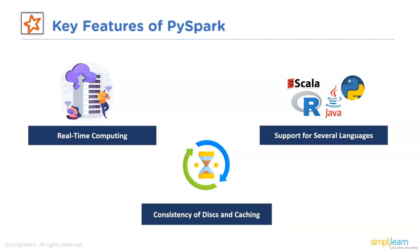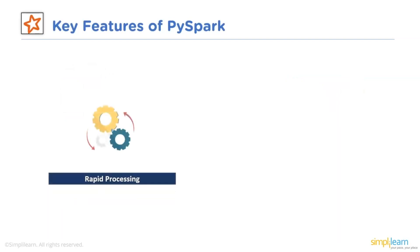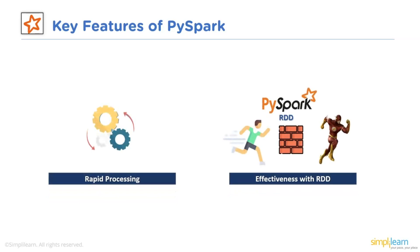The next feature is consistency of disk and caching. The PySpark framework offers powerful caching and reliable disk consistency. Time is money, so to work effectively we need powerful and fast processing. The next amazing feature of PySpark is rapid processing — roughly 100 times quicker in memory and 10 times faster on disk. The most important feature of PySpark is effectiveness with RDD. Working with RDD is made easier by the dynamic typing of Python.